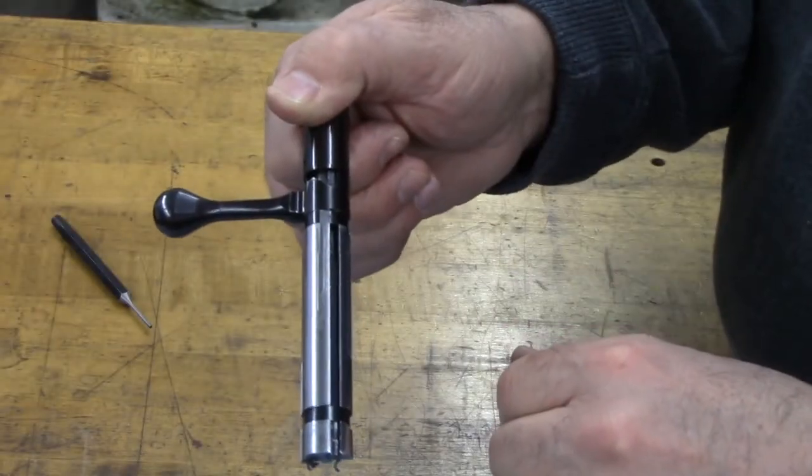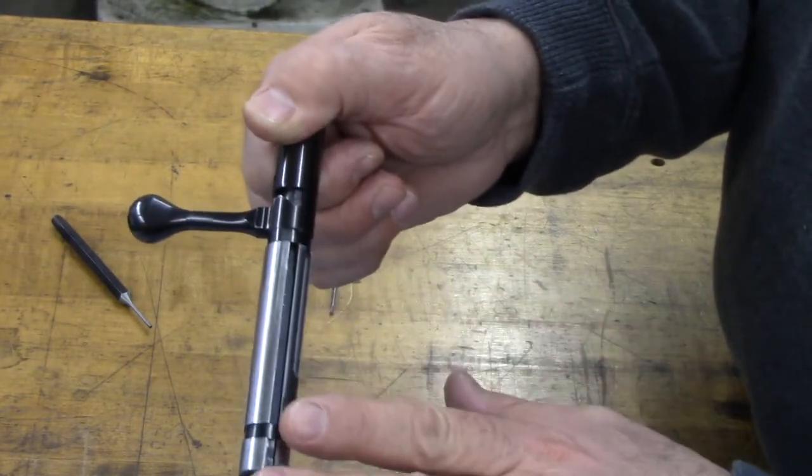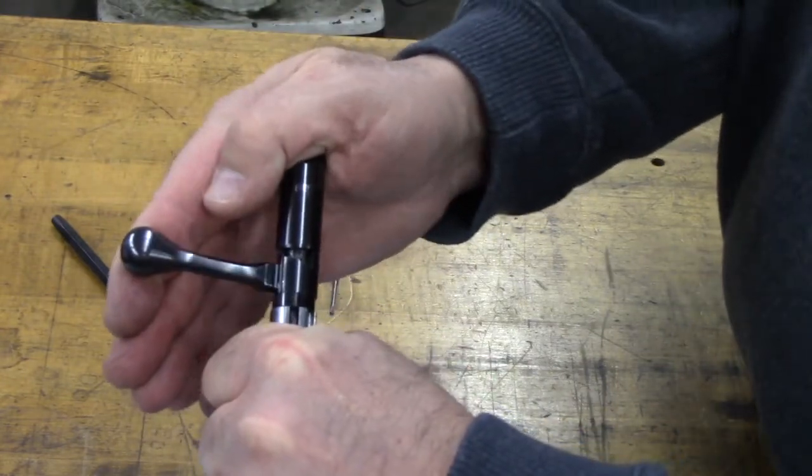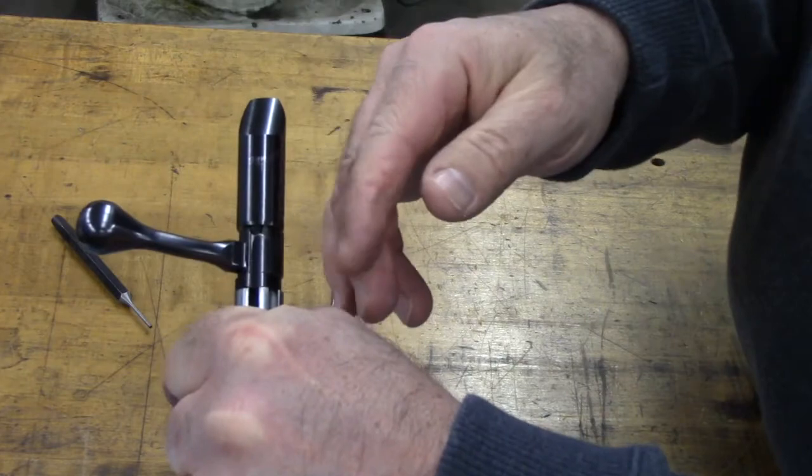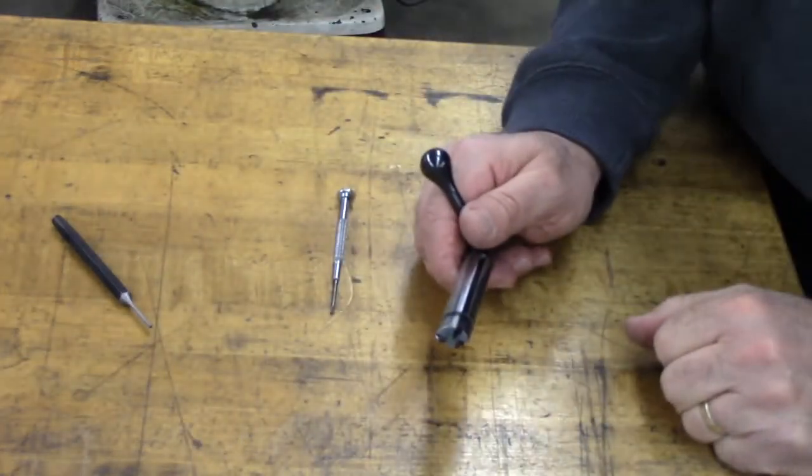The bolt won't go back into the rifle unless it's cocked. So in order to cock it, I'm going to grab ahold of the bolt body, and just crank up on the bolt handle until it's in the cocked position.